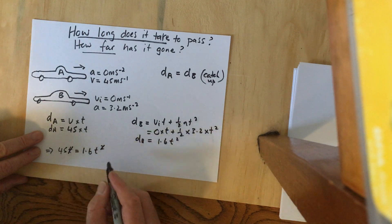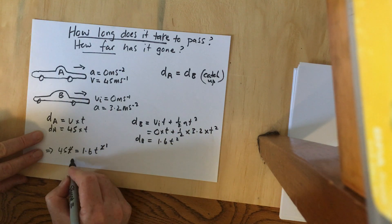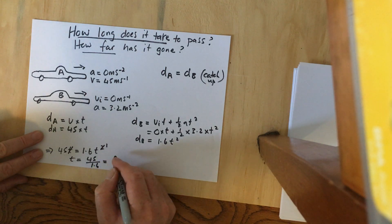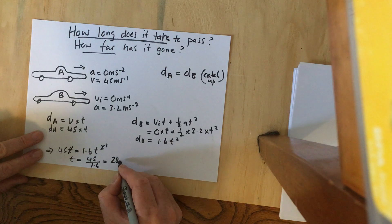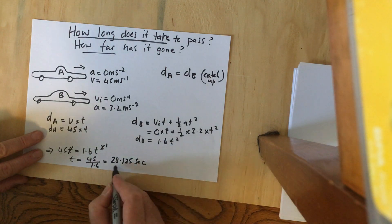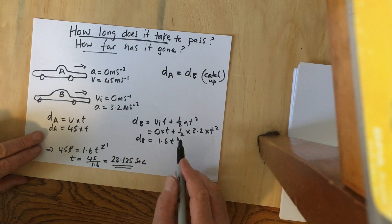This can be simplified by canceling one t. Therefore, t equals 45 divided by 1.6, which works out to about 28.125 seconds. So it's around 28 seconds when Car B passes Car A.